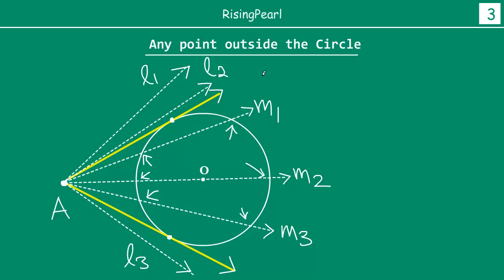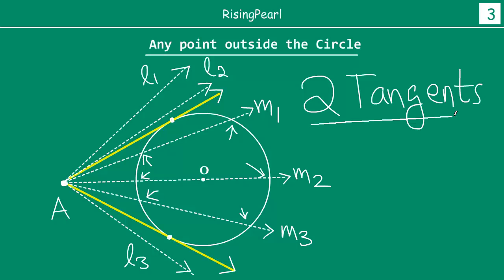And these are the points respectively. It means that if you take any external point, from there you can draw two tangents — not one, not three, only two tangents can be drawn from any one external point to any given circle. So friends, in the next webisode we are going to take a look at what can we know about these two tangents which are drawn from the same external point to a common circle.